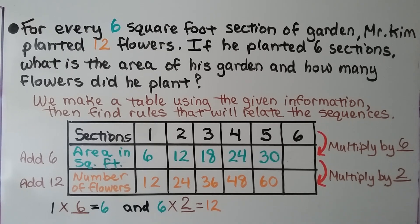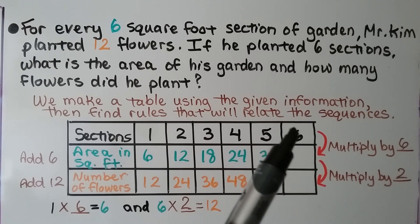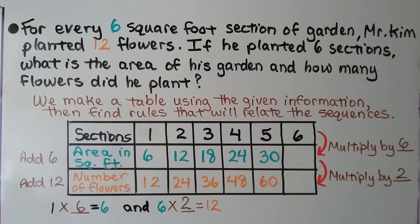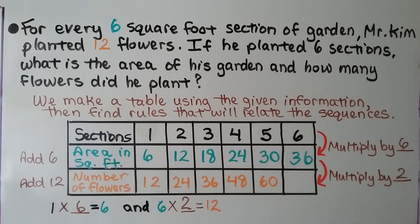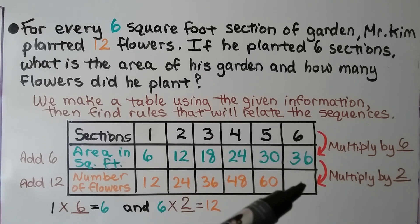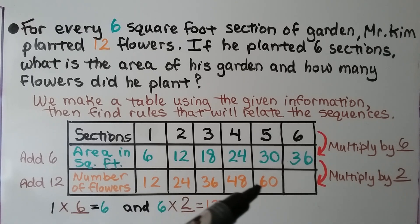Now we can find the missing information for 6 sections. It would be 6 times 6, which would be 36. We also could have just done 30 and added 6. And for number of flowers, we do 36 times 2, or we could even do 60 plus 12. That would be 72. So the area of his garden would be 36 square feet, and he would have 72 flowers.